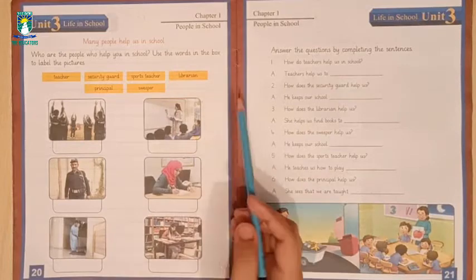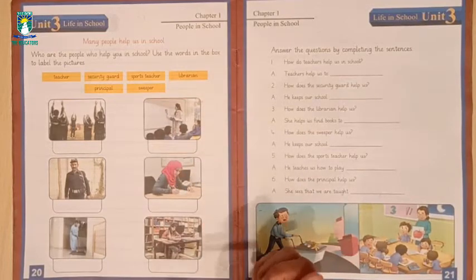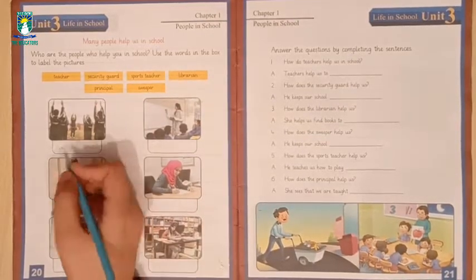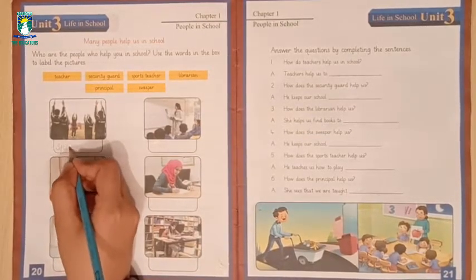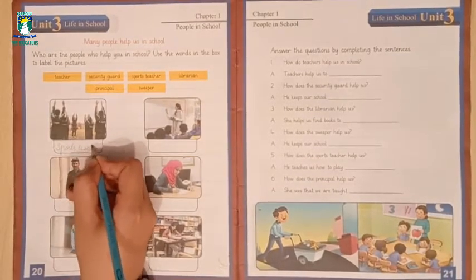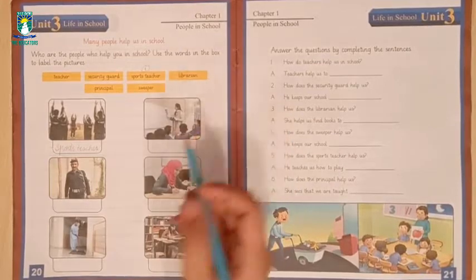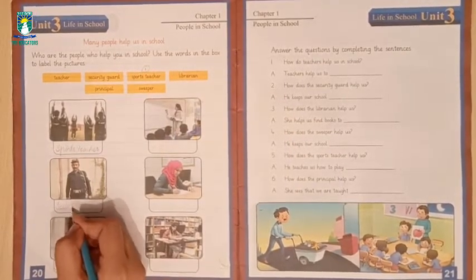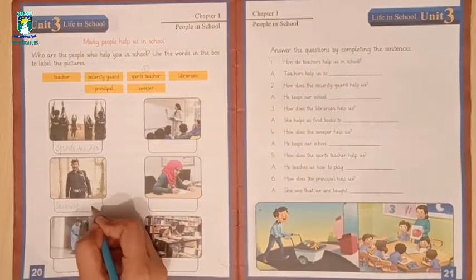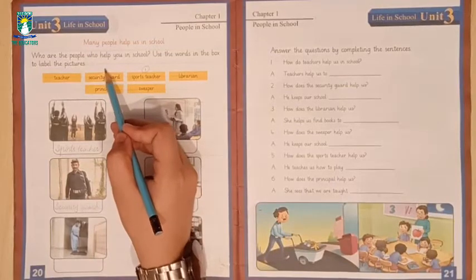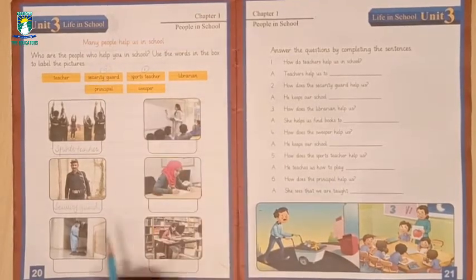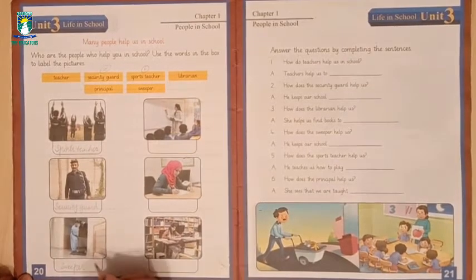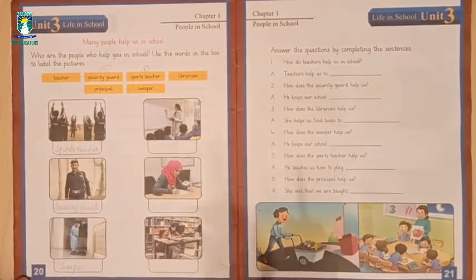Word bank has six words which we have to write for six pictures. In the first picture we have to write sports teacher. Next one is security guard. Security guard saves our school. Next one is sweeper. Sweeper keeps our school clean.